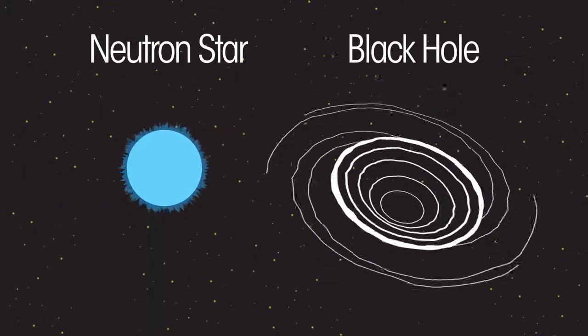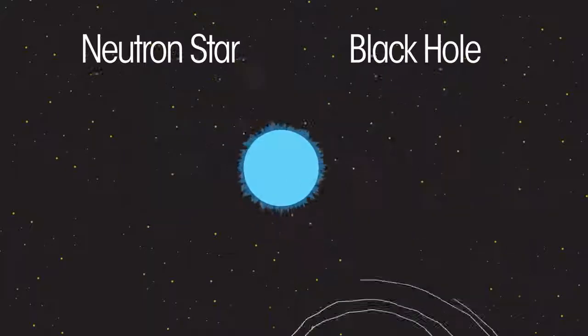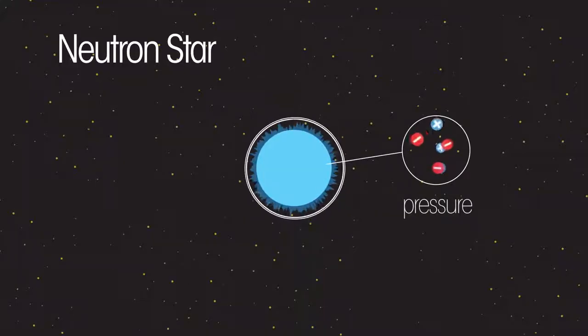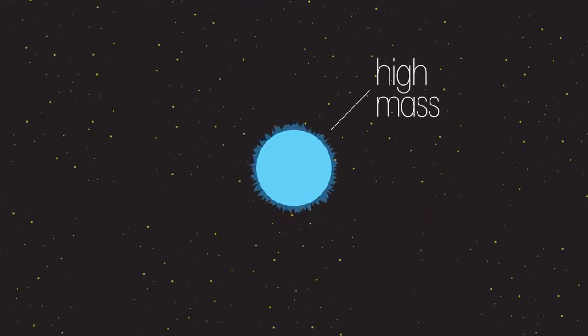One of two things can happen next. Either a neutron star or a black hole is formed. A neutron star is made of densely packed neutrons, formed when under immense pressure electrons are forced to merge with protons. A black hole is formed if the mass of the neutron star is sufficiently high to cause further gravitational collapse.